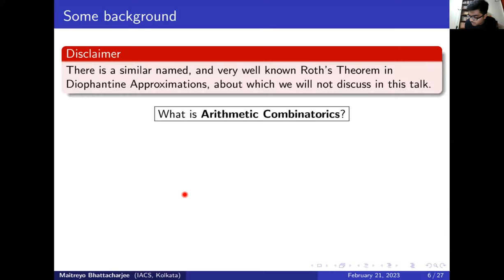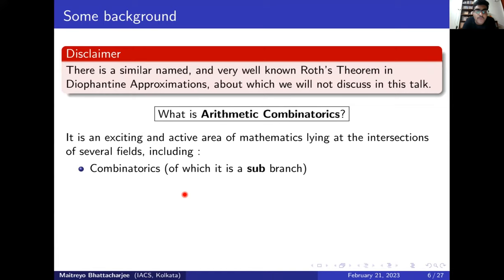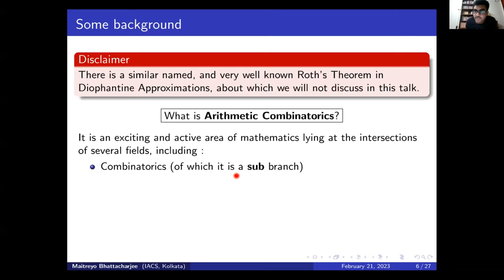What is arithmetic combinatorics? Combinatorics deals with counting objects, whether abstract mathematical objects or familiar real-life objects. Arithmetic combinatorics is a very exciting and active research area lying at the intersection of several fields — it is an extremely interdisciplinary subject. Its constituent fields include combinatorics, algebraic combinatorics, and various other sub-branches.